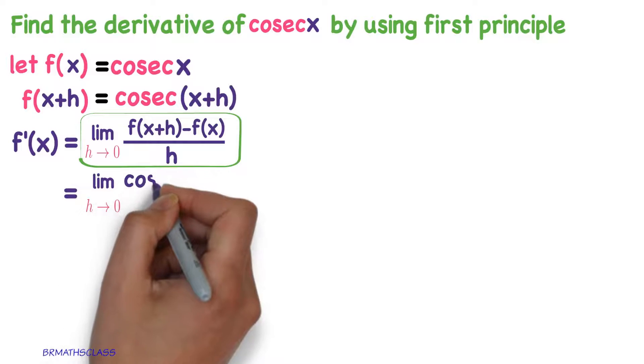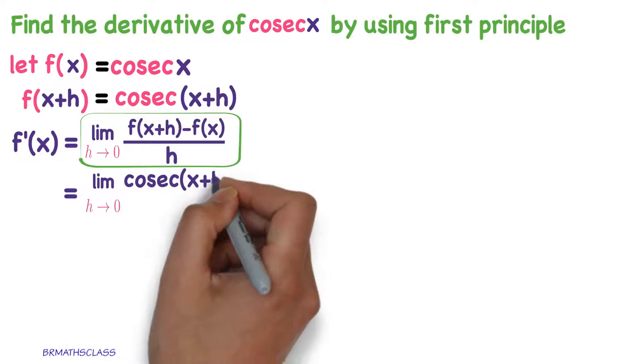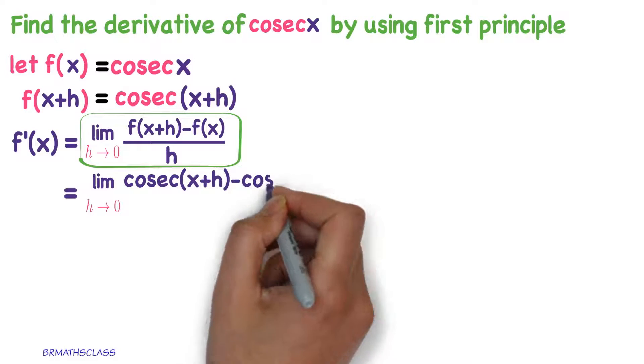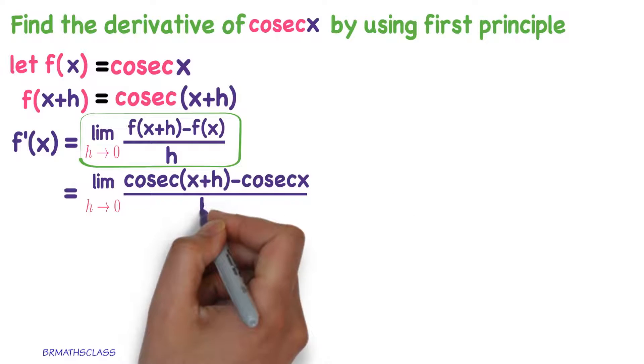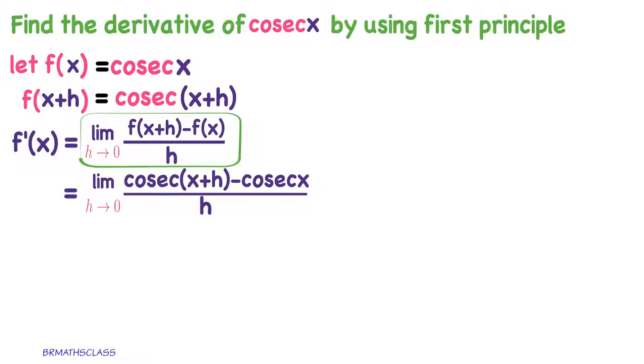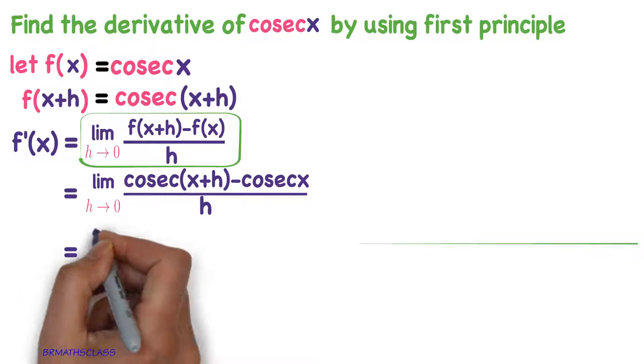Limit h tends to 0, f of x plus h is cosecant x plus h minus f of x is cosecant x divided by h. We know the trigonometry formula. Cosecant x is 1 by sin x.